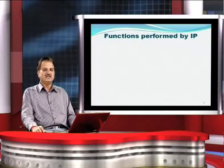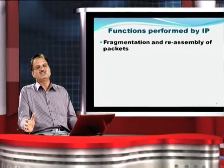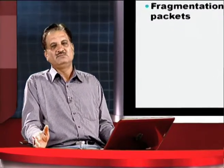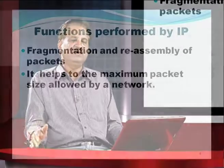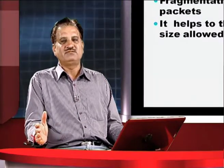The basic function of IP includes fragmentation and reassembly of packets. When a source wants to transmit a large amount of data, the data is converted into a datagram. If the datagram is of large size, it is further converted into fragments. These fragments are transmitted from the source, each fragment having a unique number. At the receiver, the fragments are reassembled. This helps to utilize the maximum packet size allowed by the network.